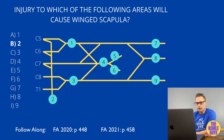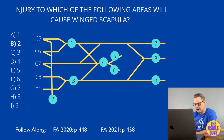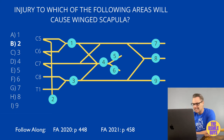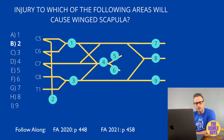Winged scapula is caused by a lesion to the long thoracic nerve. Common reasons for winged scapula include trauma — most likely a stab wound — but this is also something you might see following an axillary node dissection after mastectomy.